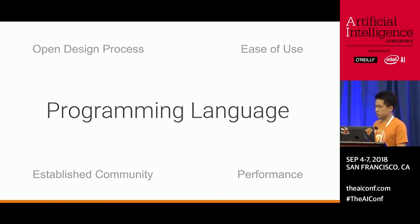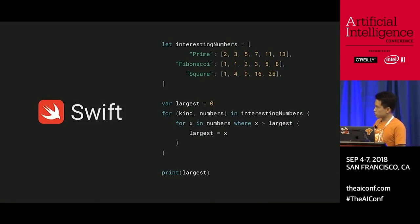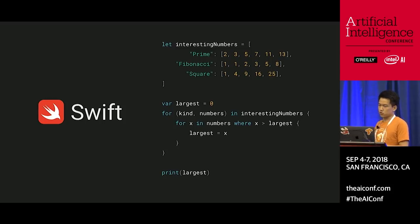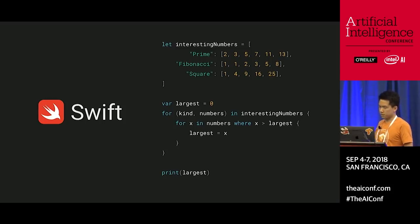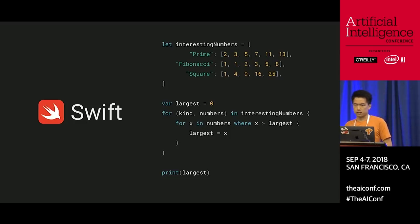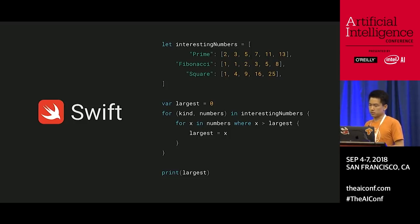This brings us to the Swift programming language. Swift is a fast, modern programming language, and it's super easy to use. It's cross-platform, has a clean syntax like Python, and has all the powerful capabilities like type inference, optionals, and supports functional programming, and all the great features.